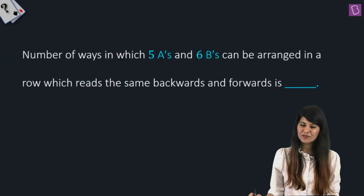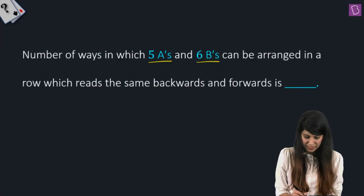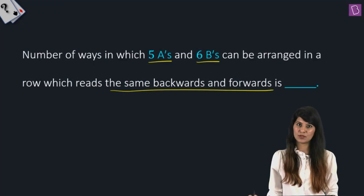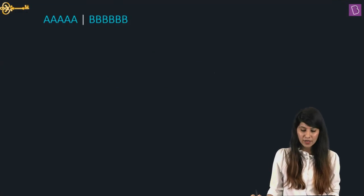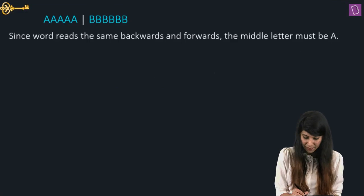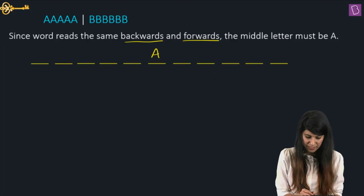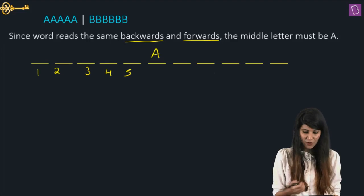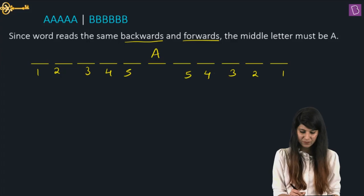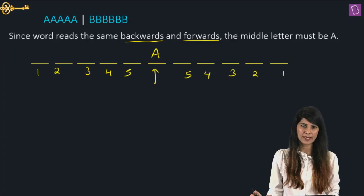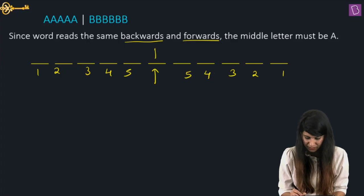In this question, we need to figure out the number of ways in which 5 A's and 6 B's can be arranged in a row which reads the same backwards and forwards. For a word to be read the same backward and forward, the middle letter must be A.